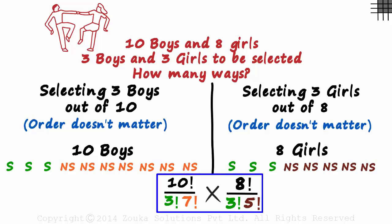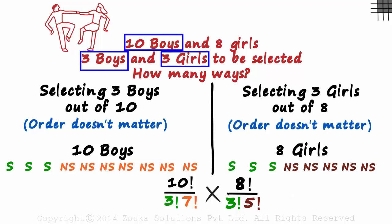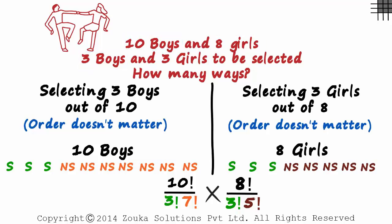If you solve this, you should get the answer as 6720. 6,720 ways in which we can select 3 boys and 3 girls from 10 boys and 8 girls.